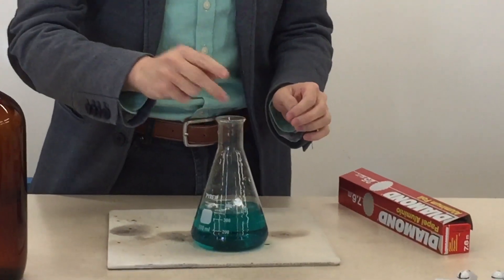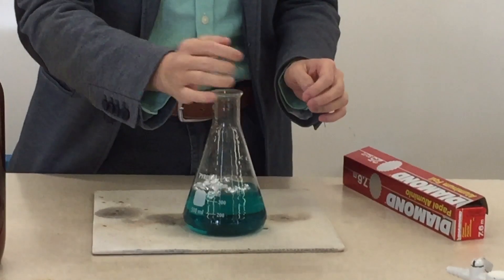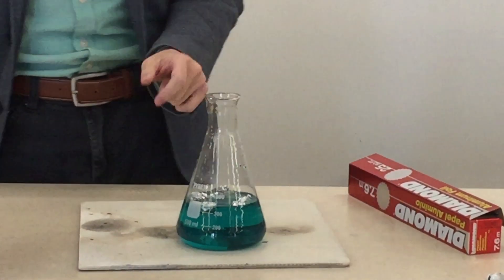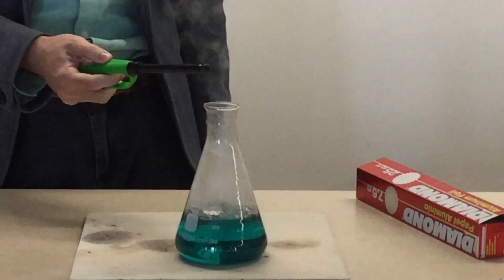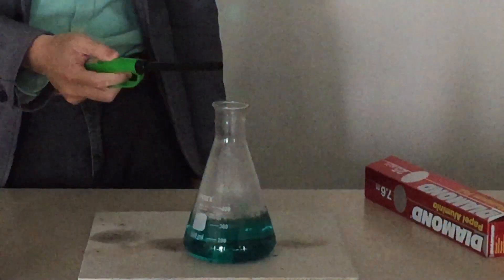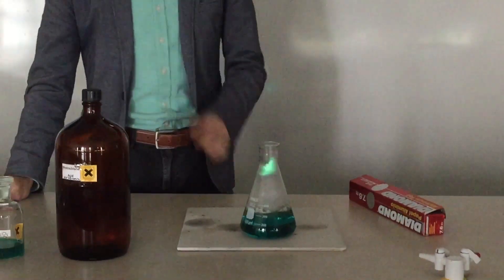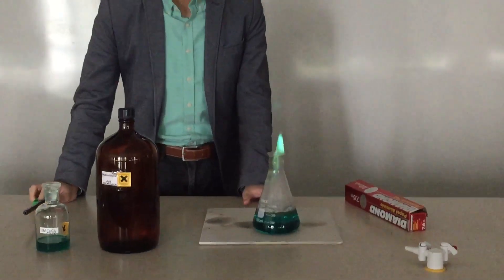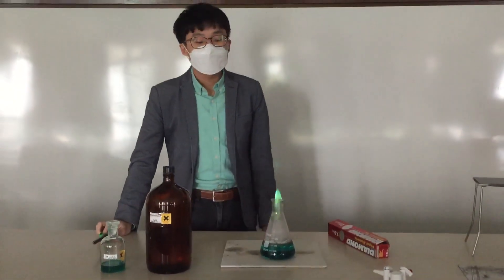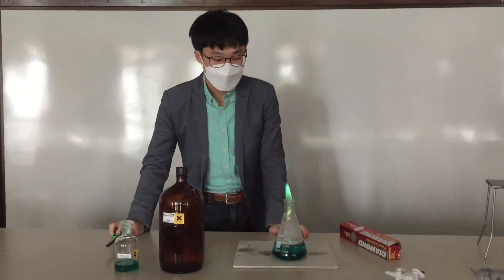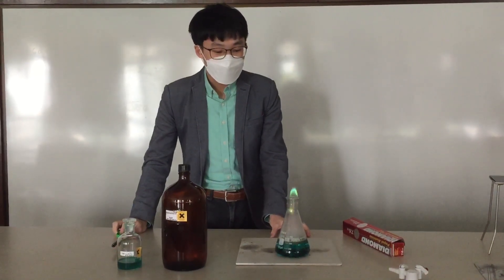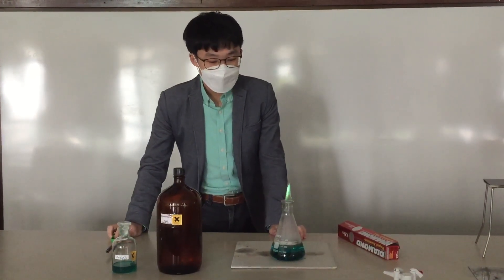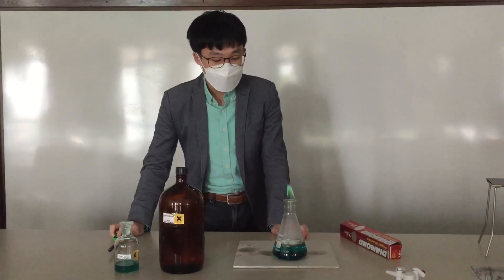You can see we are going to add some aluminum foil in it and it starts bubbling a little bit. We are going to switch off the light and light it up. This is called the Northern Lights demonstration, and you are going to see a very beautiful bluish-green flame in the conical flask.